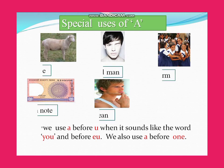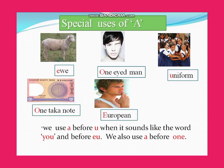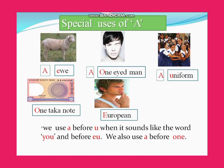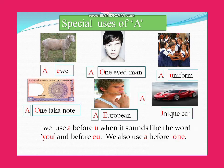Special use of 'a': a one-eyed man, a uniform, a one-taka note, a European, a unicorn. Here we use 'a' before 'u' when it sounds like the word 'you', and before 'eu' we also use 'a'. We also use 'a' before 'one'.